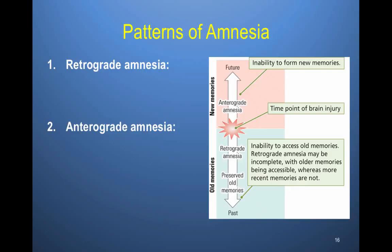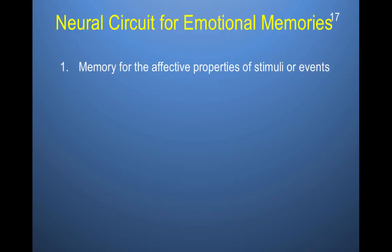Immediately surrounding the point of damage, amnesia is most severe, but as the temporal distance from the damage increases, it becomes less severe. In reality, retrograde amnesia typically represents a loss of memories spanning a week, a month, or possibly up to a year around a traumatic brain injury — such as brain surgery or combat. Memories closest to the traumatic event are lost, while older memories are preserved. So we have two types of amnesia: anterograde amnesia, an inability to form new memories, and retrograde amnesia, an inability to access older memories.